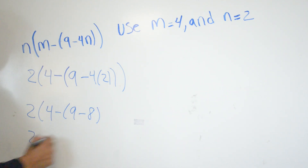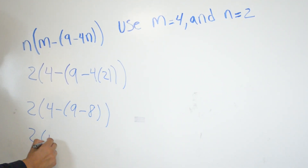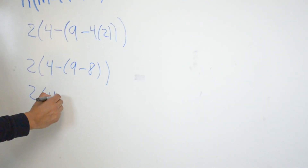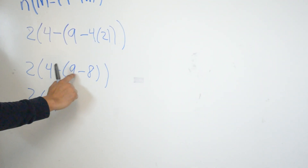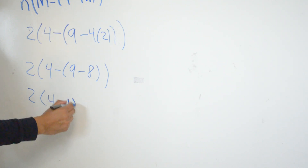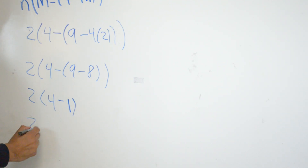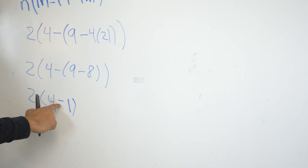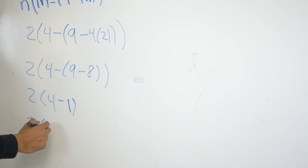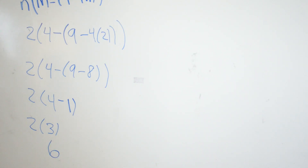4 minus 9 minus 8 is going to give us 1. So we do 2 times parentheses 4 minus 1, which is going to be 3. Then 2 times 3 is going to give us 6.